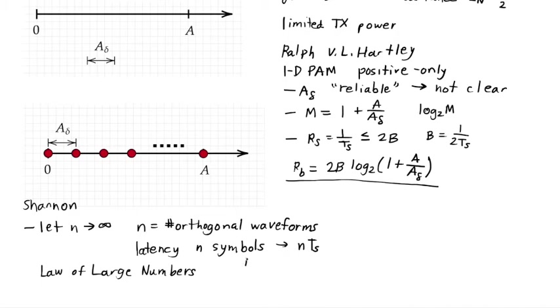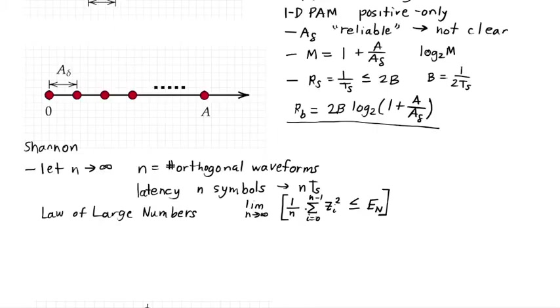What it says is that in the limit, as N goes to infinity, this measurement, 1 over N times the sum of Z sub I squared from I equals 0 to N minus 1, over all dimensions, is going to be less than or equal to the variance, the variance E N that we described before. And this will happen. This inequality is true with probability one. That means that this is going to happen.